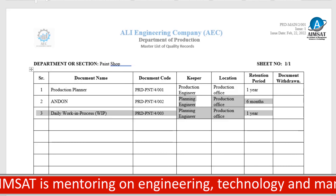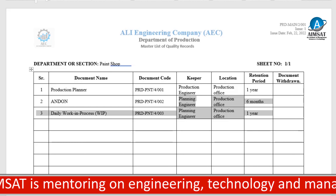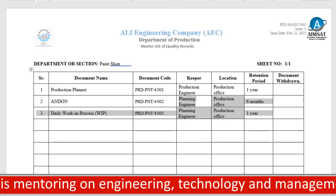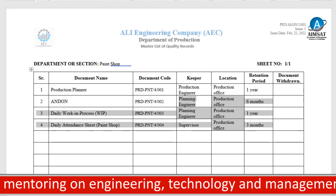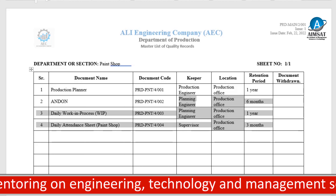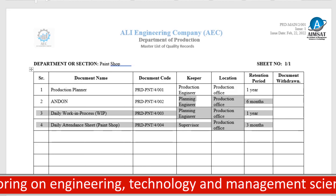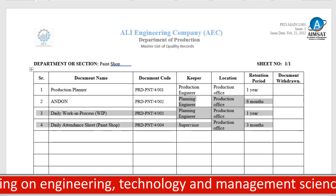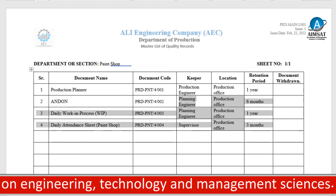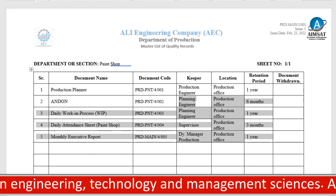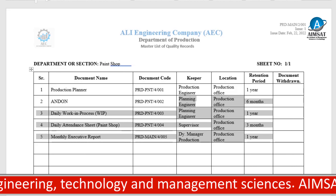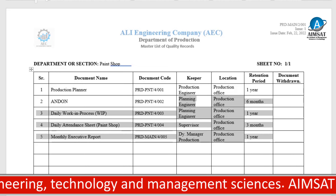Each and every form which you fill in the organization on a daily, monthly, quarterly, or annual basis — for example, annual budget, annual training planner — these are all quality records. You must enlist all of them in the master list of quality records.